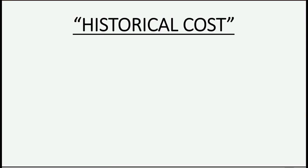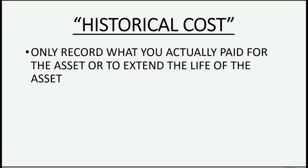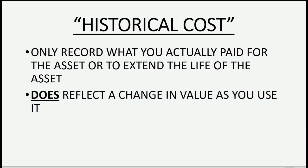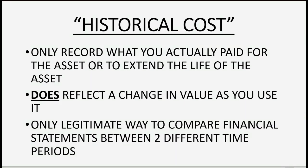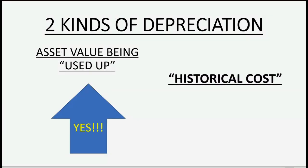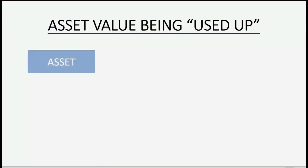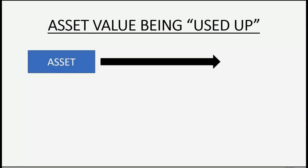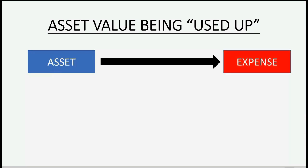We instead use something called historical cost — only record what you actually paid for the asset or to extend the life of the asset. That does reflect a change in value as you use the asset, and it's the only legitimate way to compare financial statements between two different time periods. When an asset value is being used up, you can picture the asset diminishing as you use it, and the amount used over time becomes the expense.